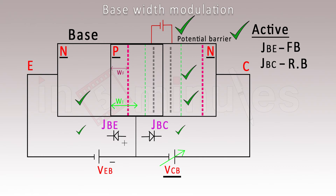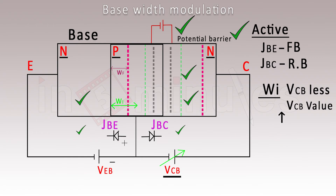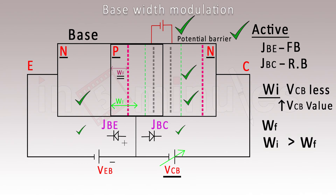As you increase the collector-to-base voltage VCB, you are increasing the reverse bias on the p-n junction. Wi is the initial width of the depletion region when VCB is low. When VCB increases, the depletion region widens and penetrates further into the base. Wi is the initial base width and Wf is the final base width — the initial width is greater than the final width, so increasing reverse bias decreases the base width.